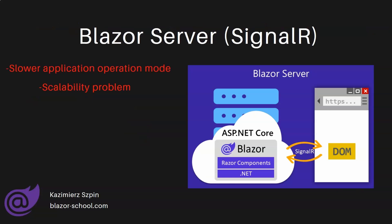With more users, you would simply need a bigger, better server. On the other hand, when it comes to advantages, the application download size in this mode is much smaller than with WebAssembly, so the initial connection will be faster. The application uses server resources, so we have all the server-side security measures in place, and we can easily use various server-side libraries. The code is not exposed to the client. There are minimal browser requirements, and the Blazor Server application will work flawlessly on most browsers, including older versions.